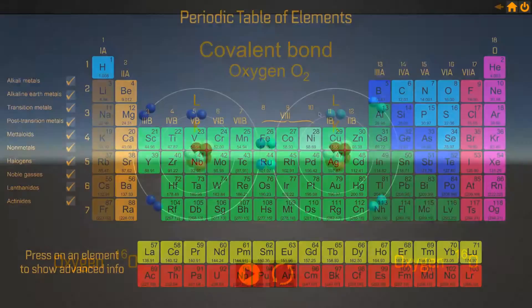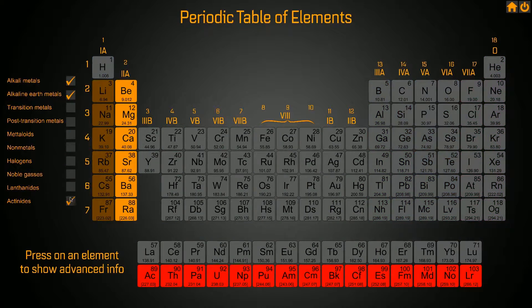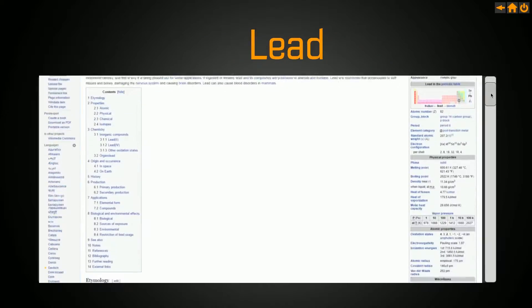Then there's a built-in periodic table with customizable filters for each group of elements. Clicking on one of the elements will lead you to the desired Wikipedia page for extra information.